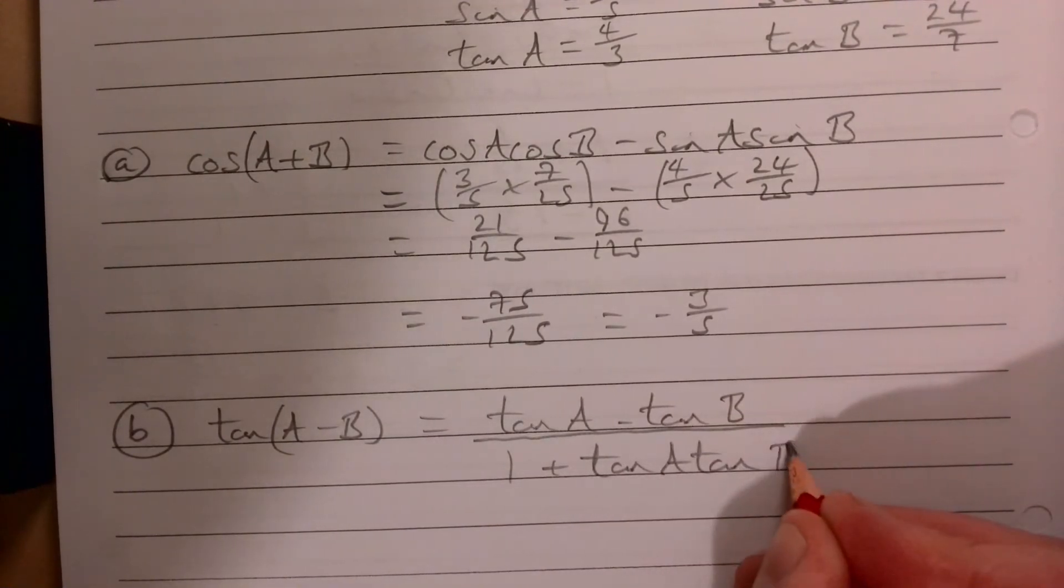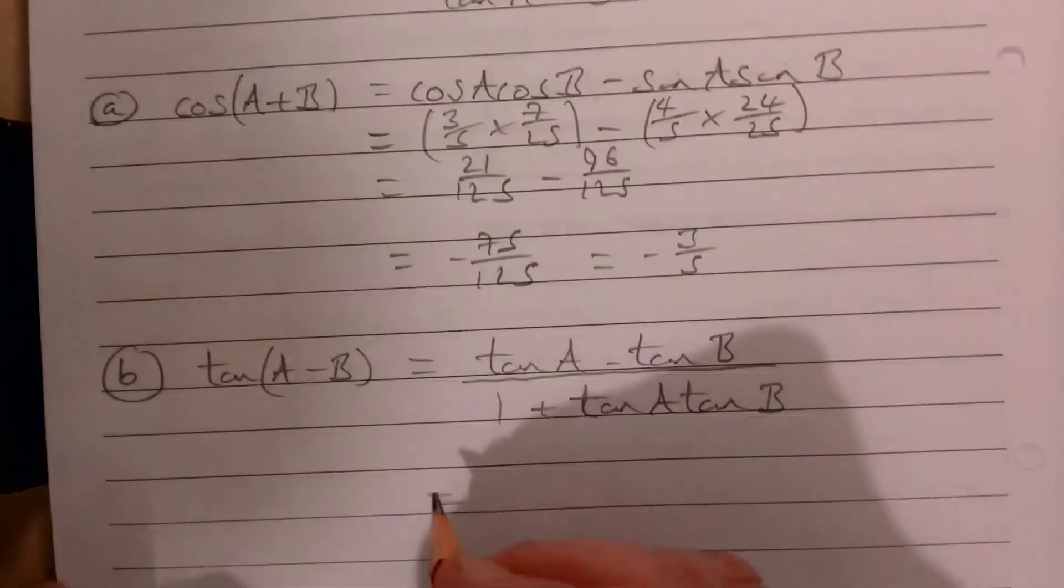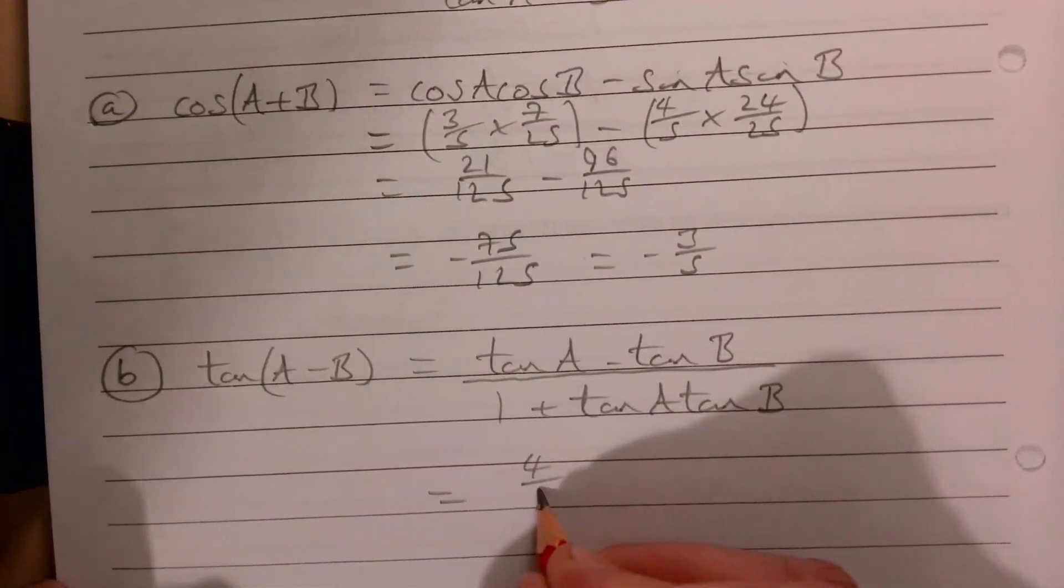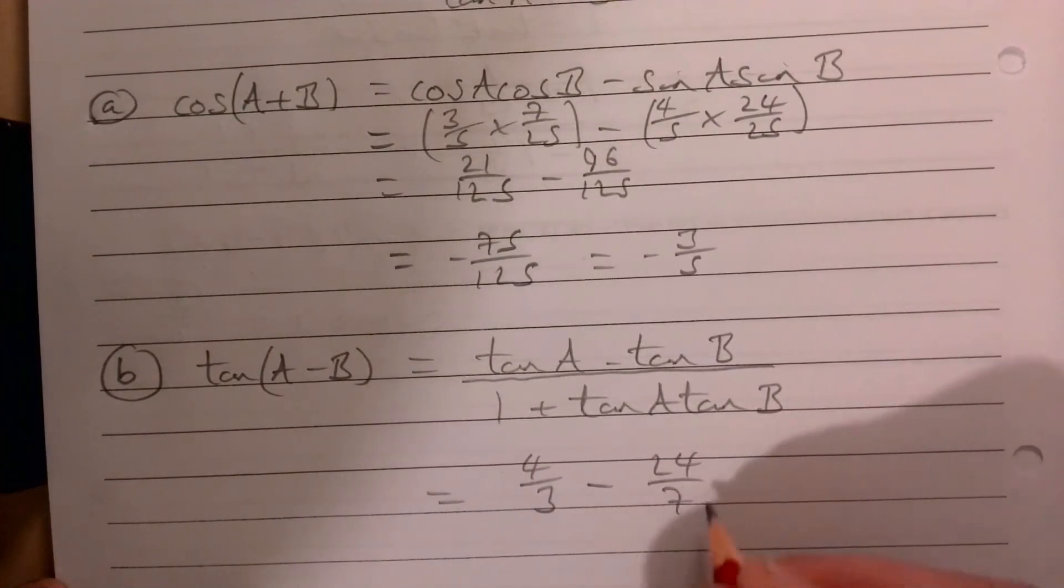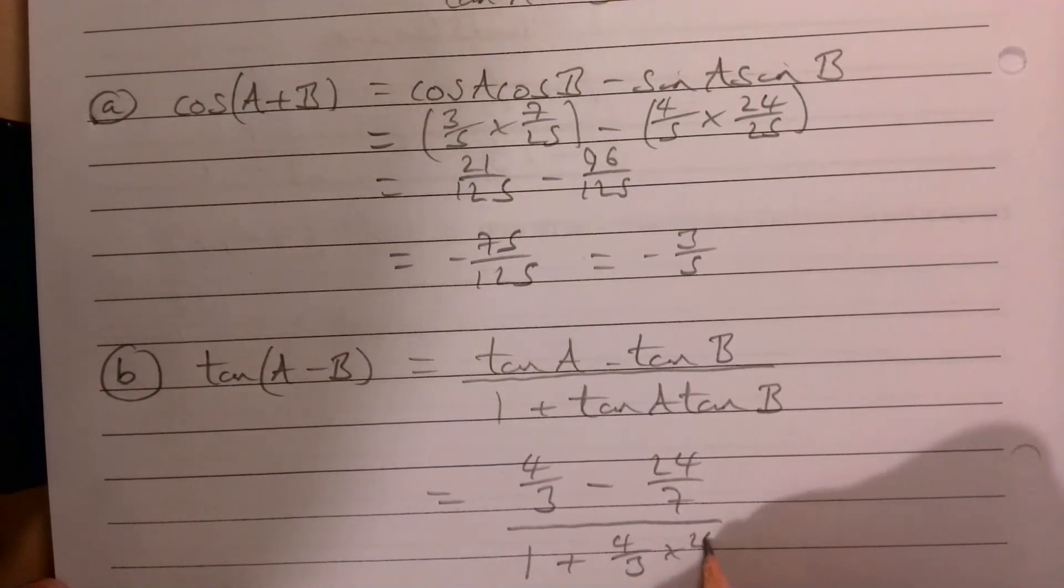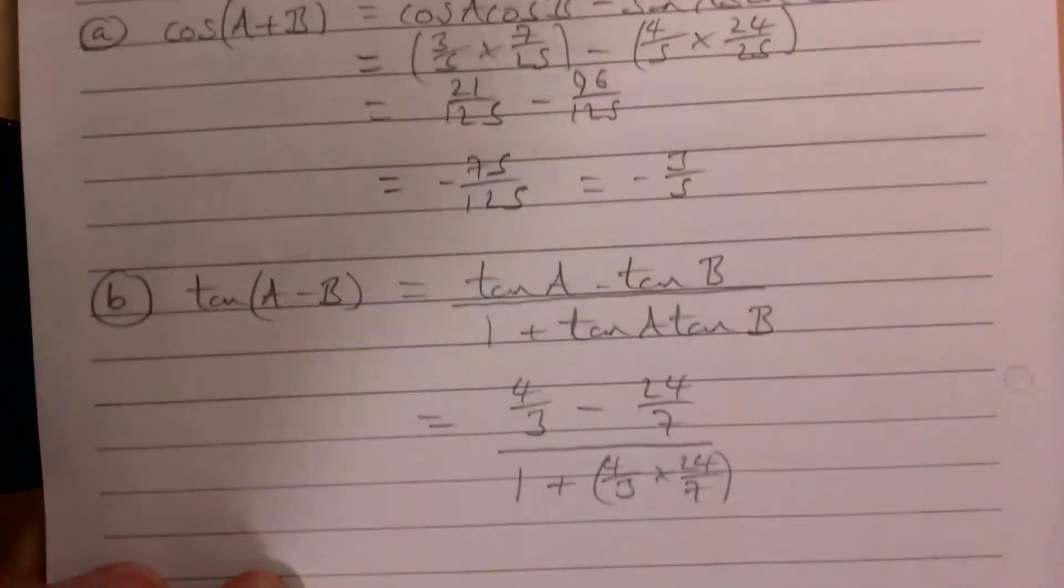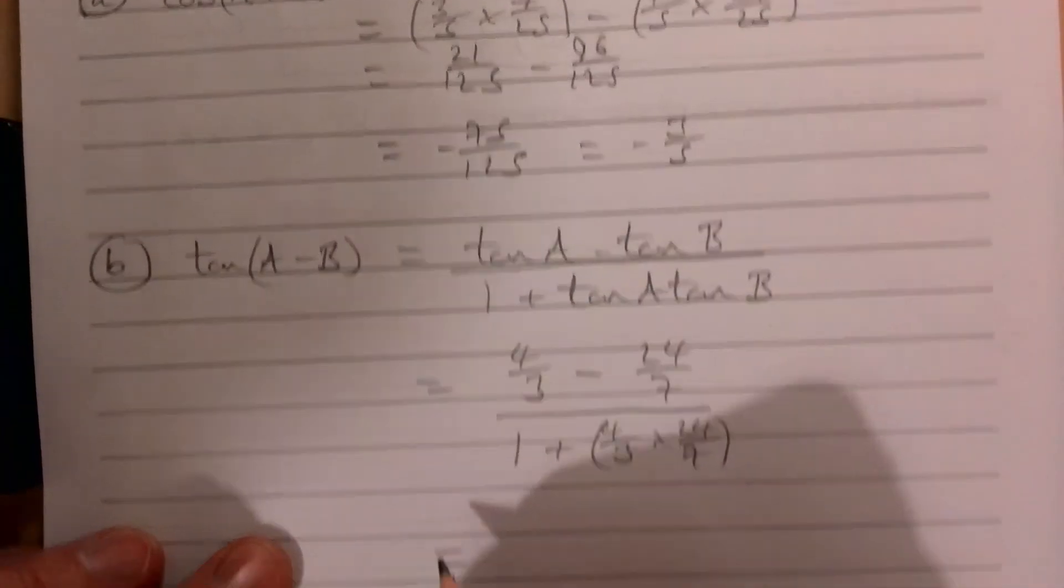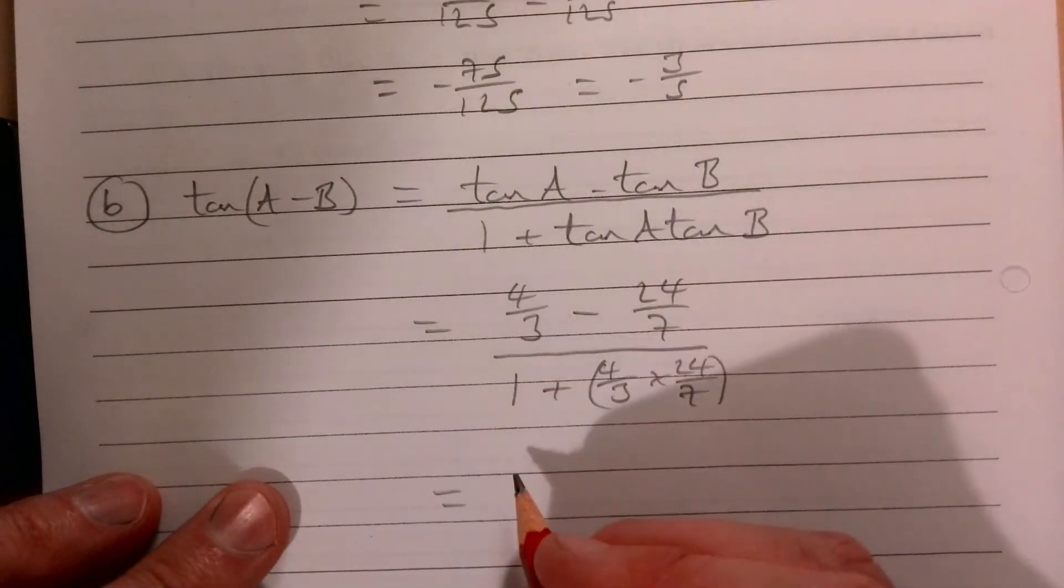The formula for that is (tan A - tan B) / (1 + tan A tan B). Fill in the blanks for this: 4/3 and just looking from above, take away 24/7, all over 1 plus 4/3 multiplied by 24/7.